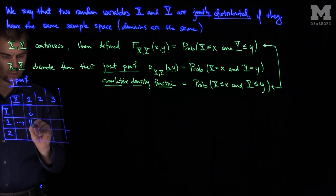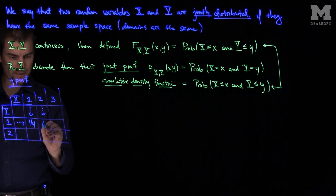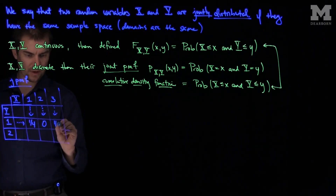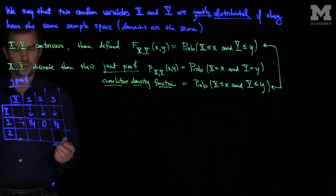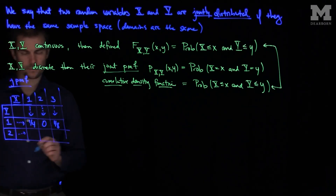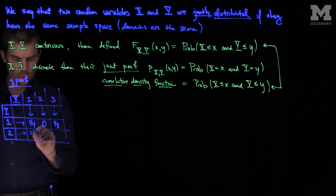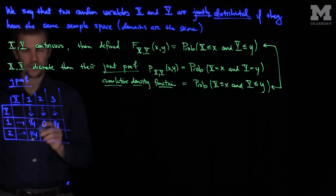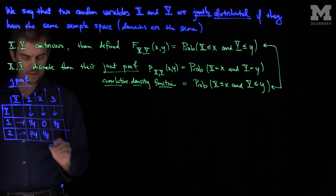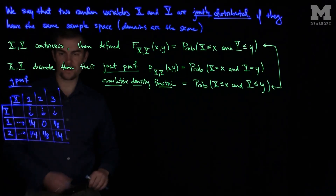Let's say that x equals 1 and y equals 1 takes place with probability 1/4. Let's say that x equals 2 and y equals 1 happens with probability 0, and x equals 3 and y equals 1 happens with probability 1/8. Now for y equals 2: x equals 1 and y equals 2 happens with probability 1/4. So that's 1/2 and 1/8, which is 5/8, so we have 1/8 over here, making 6/8, and I'm going to need another 1/4 over here.